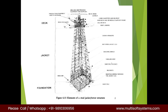Then we have tubular joints. Tubular joints involve a specialized design specific to jackets. The code we use for jacket design is API — American Petroleum Institute. Most offshore structures related to oil and gas come under API codes. We follow API RP 2A, Recommended Practice 2A, which is used for offshore structures.